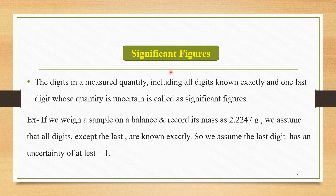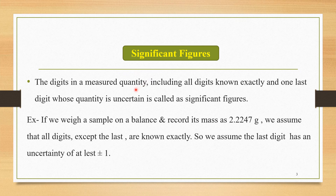In this lecture, first of all, we are going to study an important concept: significant figures. The digits in a measured quantity, including all digits known exactly and one last digit whose quantity is uncertain, is called the significant figures. These significant figures give us an idea regarding the certainty and uncertainty of a quantity by observing the position of a digit.